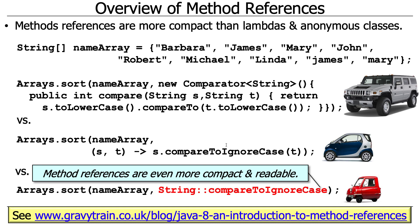We say Arrays.sort(nameArray, String::compareToIgnoreCase). This is saying: give me pairs of objects that have to be compared using the String class's compareToIgnoreCase method. That is very concise and arguably more readable than the lambda version. In fact, modern compilers will actually automatically suggest switching from a lambda to a method reference and prompt you to refactor your code to be even more concise.